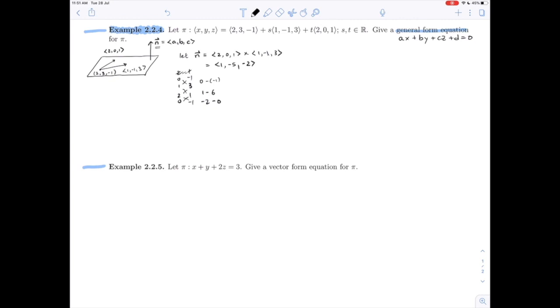There's our a, b, and c. So if we go back in this equation ax plus by plus cz plus d equals 0, then we're looking at 1x minus 5y minus 2z plus d equals 0, and this is something that we've done before.